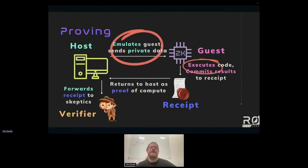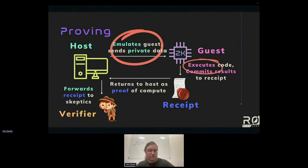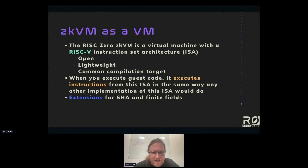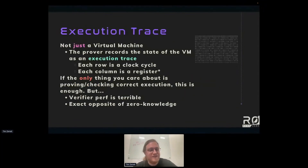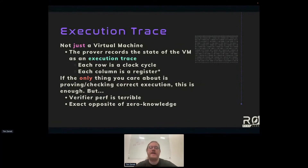Let's talk about what happens when the host is emulating the guest and the guest is executing code. In addition to just running the VM, what's making the proof work and making the receipt work? The prover is keeping track of the state of the VM at all times in something called an execution trace.